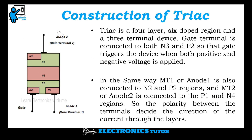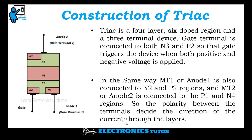This is the construction of TRIAC. TRIAC is a four-layer, six-doped region, three-terminal device. The gate terminal is connected to both N3 and P2 so that the gate triggers the device when both positive and negative voltage is applied. MT1 or anode one is also connected to N2 and P2 regions, and MT2 or anode two is connected to the P1 and N4 regions. The polarity between the terminals decides the direction of current flow through the layers.